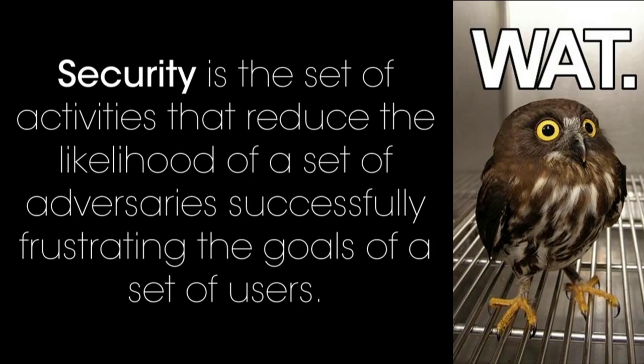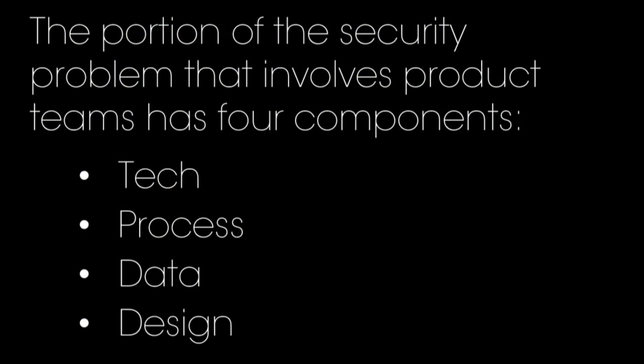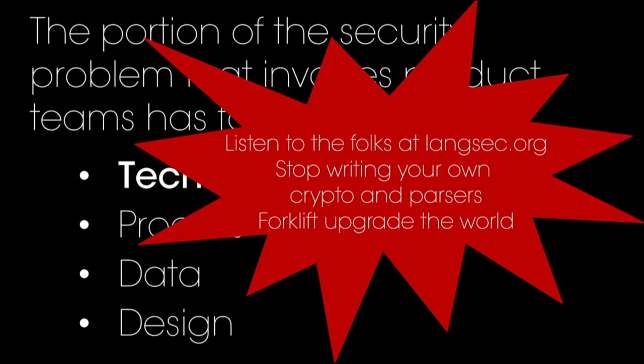Security is the set of activities that reduce the likelihood of some set of adversaries — the people who don't like you or want to stop you or your users from doing what they want to do — from stopping the users from doing what they want to do. There are no computers in this definition. If your users are doing things with computers, then computers enter the picture fairly late, once you have figured out what people are trying to do. When we divide up the security task into the part that you, as part of product teams, deal with, we've got four components. Tech is where we tend to think of security being. Technically, security is actually a mostly solved problem, with a few exceptions like fundamental trust roots and legacy platforms. The really brief rundown: stop writing your own crypto, stop writing your own parsers, forklift upgrade the world, listen to the people at langstack.org.